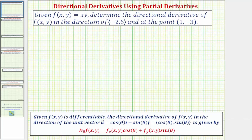For a quick review: if we're given a function f(x, y) which is differentiable, the directional derivative of the function f in the direction of the unit vector is given by the partial derivative of f with respect to x, evaluated at the point (x, y), times cosine theta, plus the partial derivative with respect to y, evaluated at the point (x, y), times sine theta.